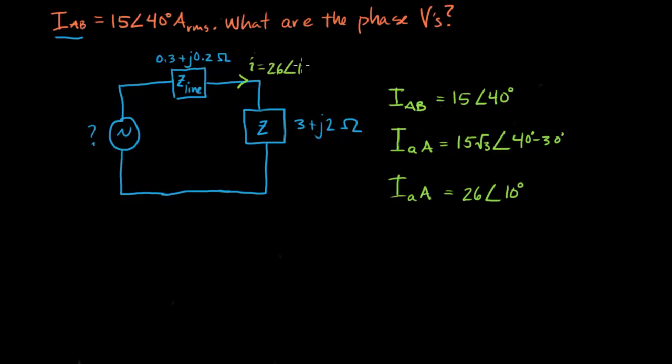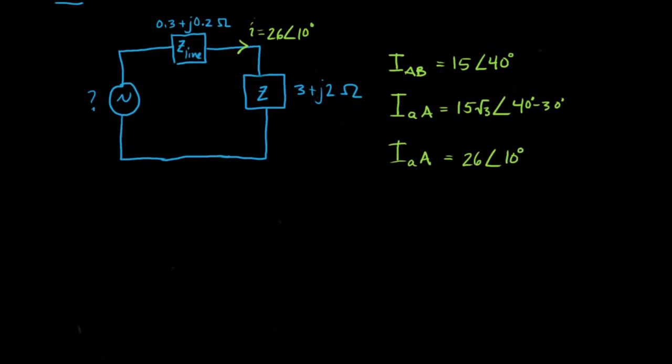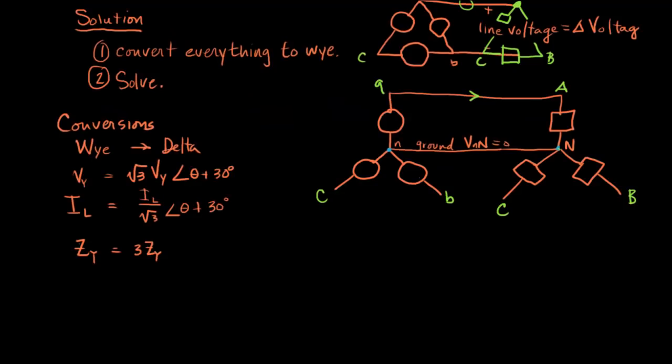So basically now we've solved, we're one step away from solving a single phase of our circuit. So we want to know what V is, and this is what? This is V_AN, right? Because we're dealing with a Y network.